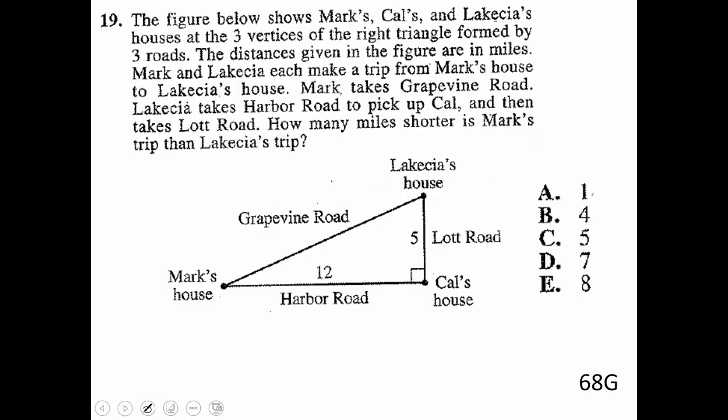Question here says, figure below shows Mark, Cal, and Lakeisha's houses at three vertices of a right triangle. It says the distance given the figure are in miles. Mark and Lakeisha make a trip from Mark's house. So they're going to start here to Lakeisha's house, and they're going to end there.